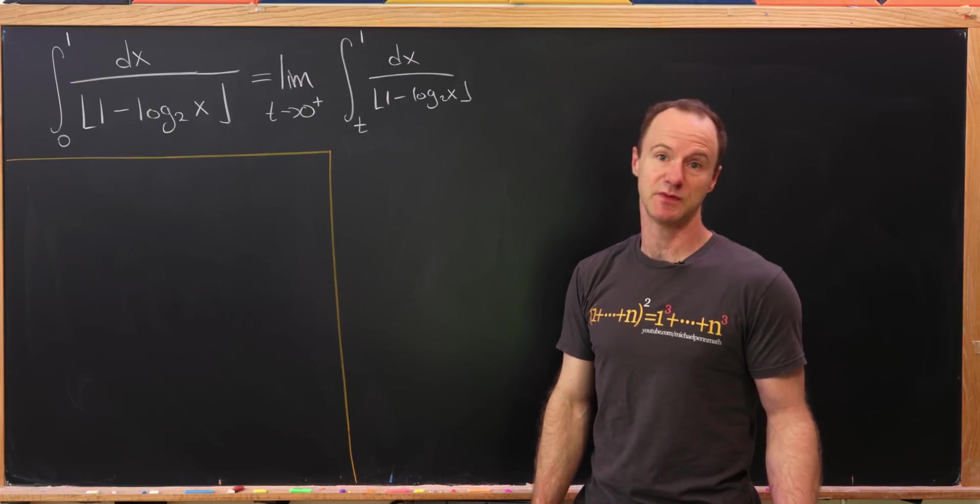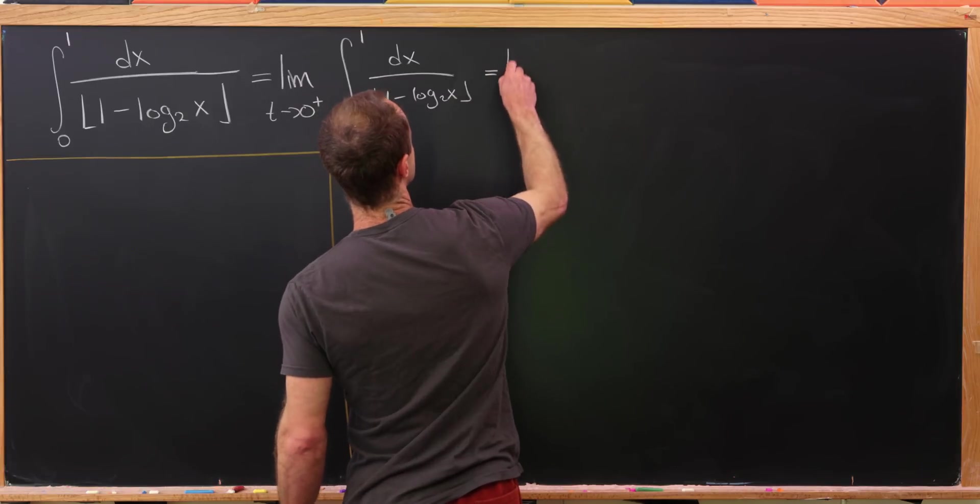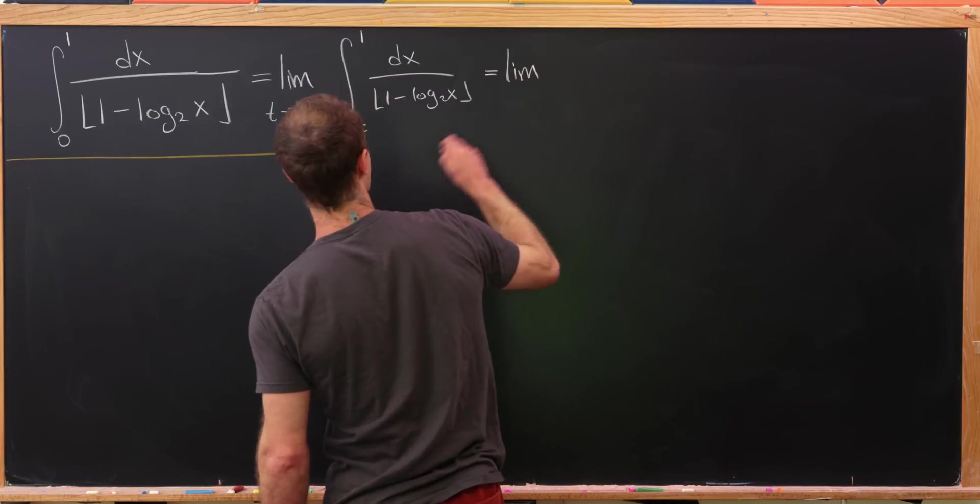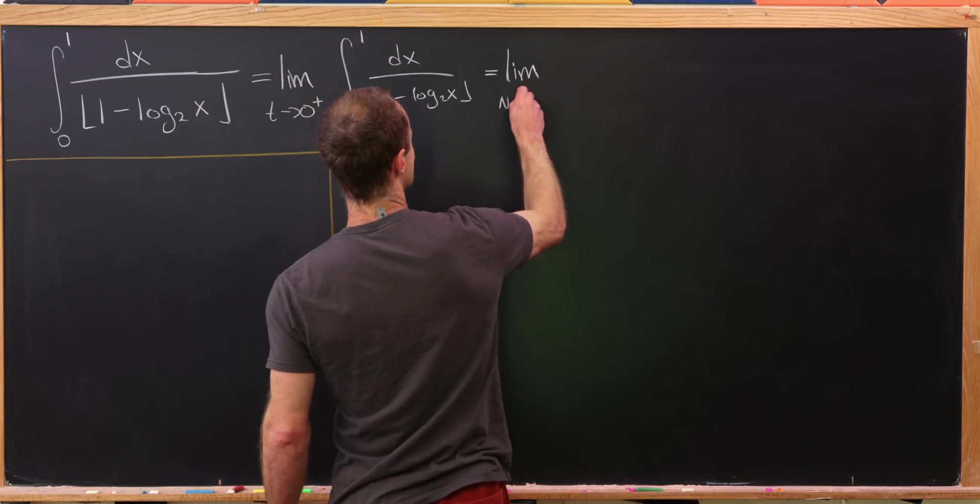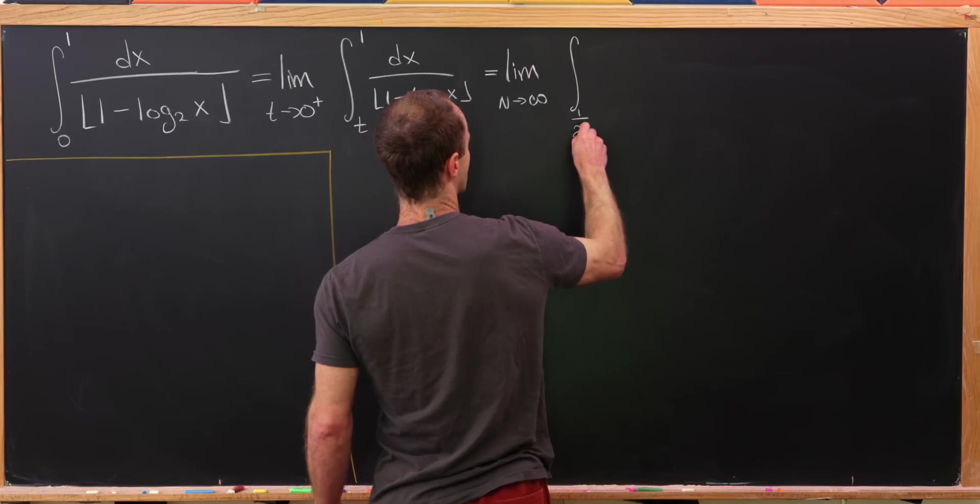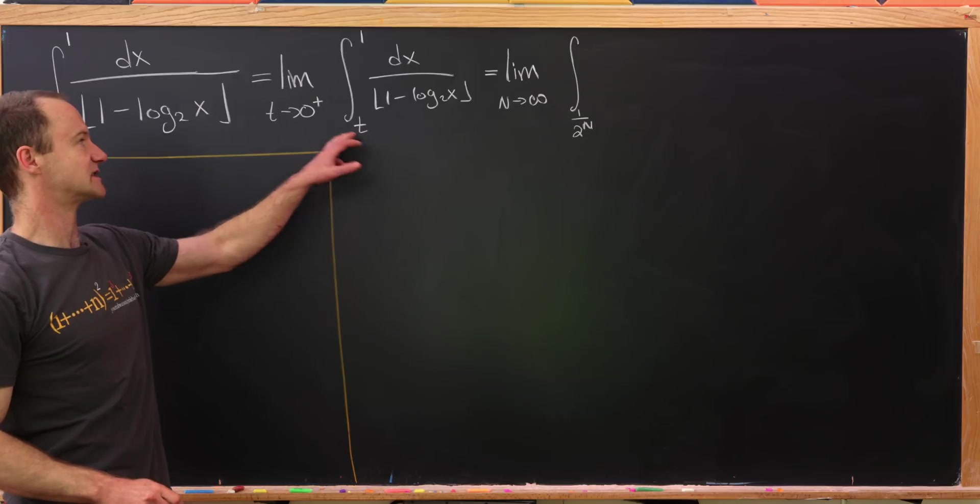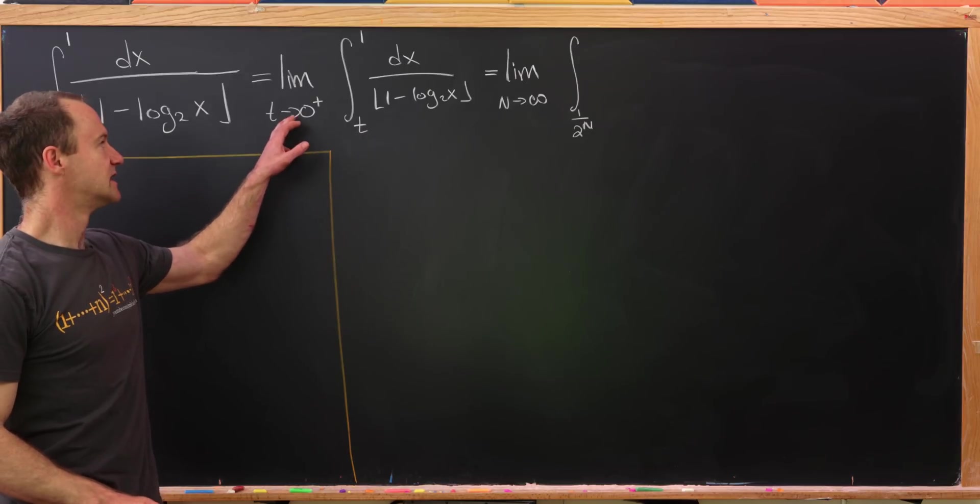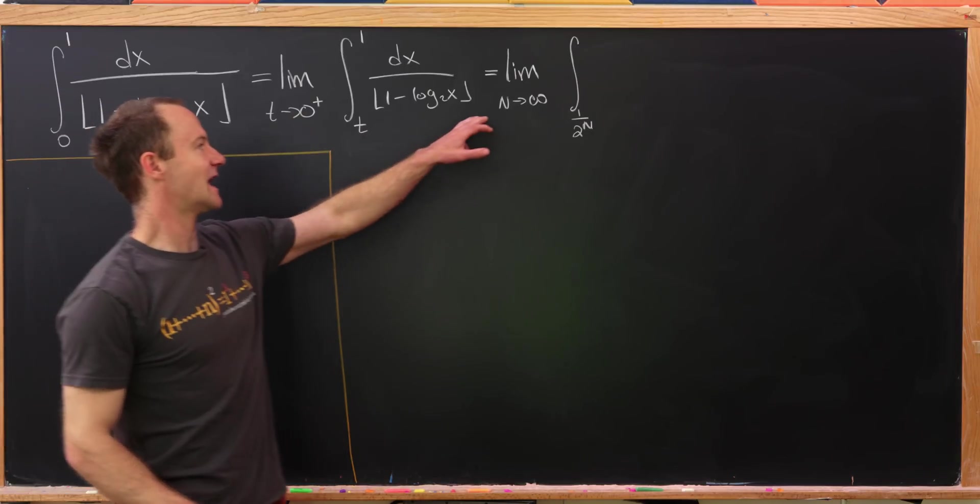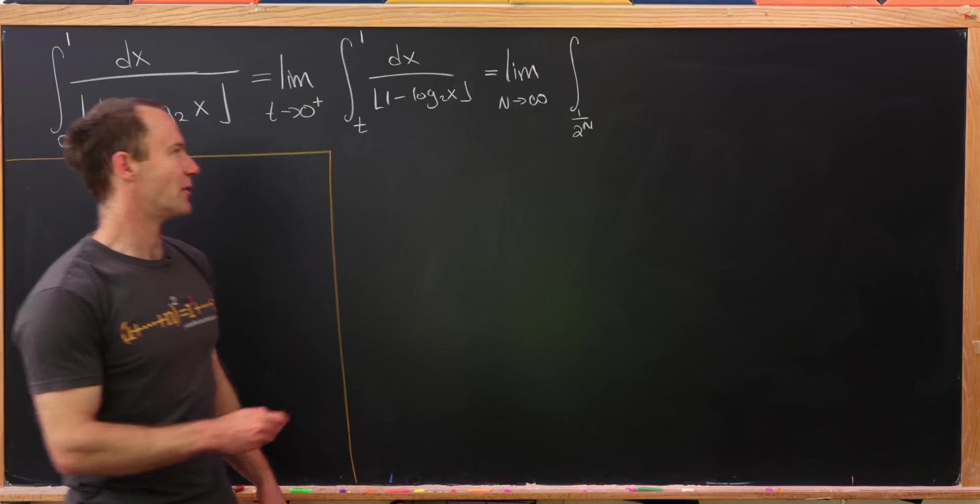So I think that would be a power of 2. So let's maybe write it as follows. Let's write this as the limit as n goes to infinity and then the integral of 1 over 2 to the n. Notice that encodes exactly what we have right here. t approaching 0 from above. As n goes to infinity, 1 over 2 to the n approaches 0 from above.